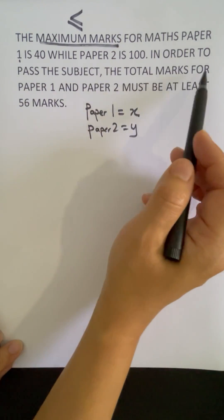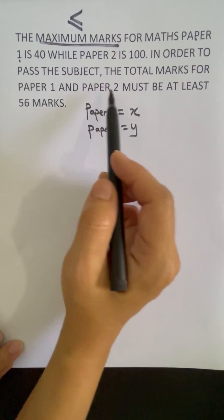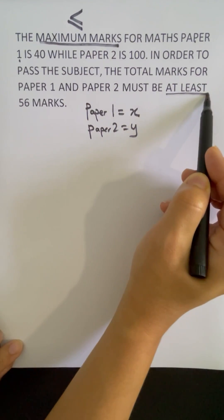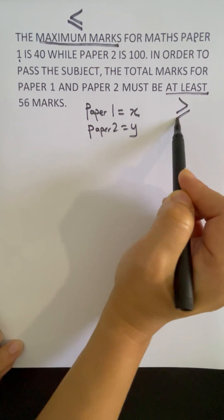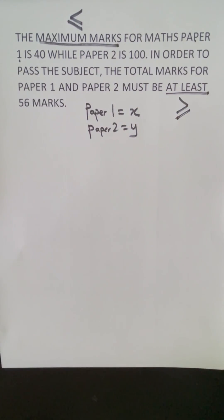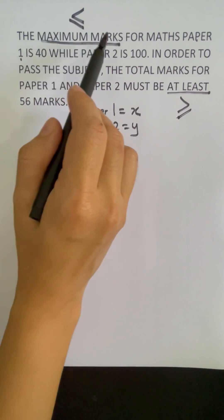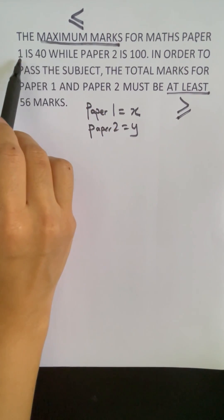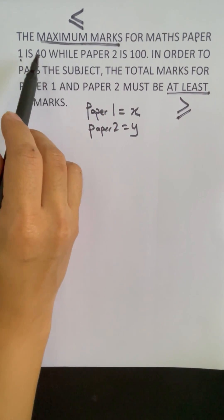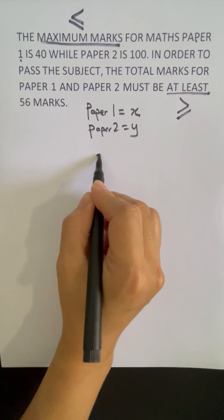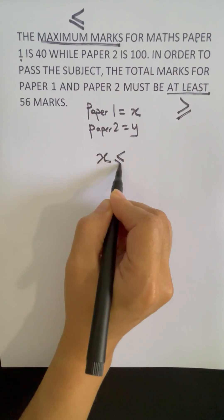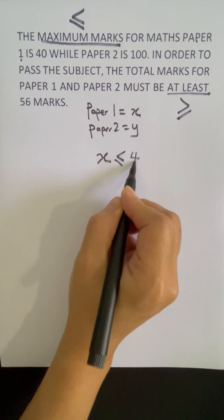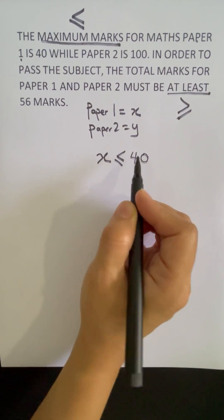In order to pass the subject, the total marks for paper 1 and paper 2 must be at least 56 marks. The word 'at least' means we use the greater than or equals to symbol. The first sentence says maximum marks for paper 1, so it will be X less than or equals to 40.